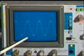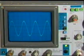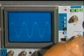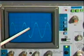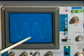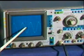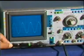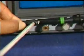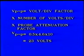Coincide the peak position of one cycle with the vertical center line using the horizontal positioning control, and align the signal peak with the horizontal line using the vertical positioning control. Read the volt/division factor, which is 0.5 volts; count the number of volt divisions, which is 4.6; and read the probe attenuation factor, which is 10. The formula is: peak-to-peak voltage = volt/division factor × number of divisions × probe attenuation factor. As per calculation, the peak-to-peak voltage is 23 volts.